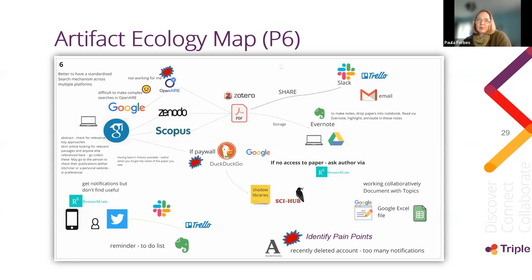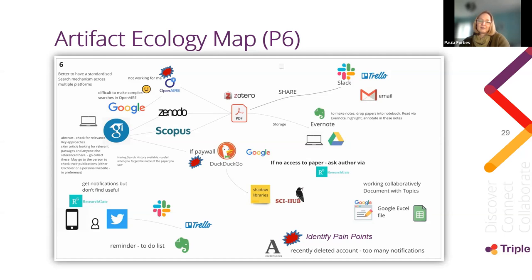This shows a bigger version from a different participant, and we can see how the method was really useful for visually identifying pain points. One user had recently deleted their academia.edu account because they had an overload of notifications. That's a cautionary tale for us to take on board — we need to make sure we don't overwhelm users by sending constant notifications; we need to put them more in control.